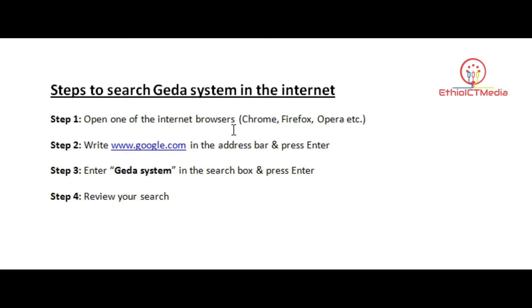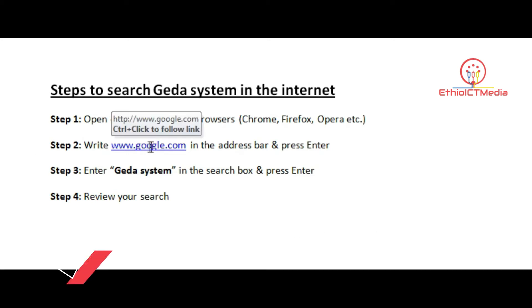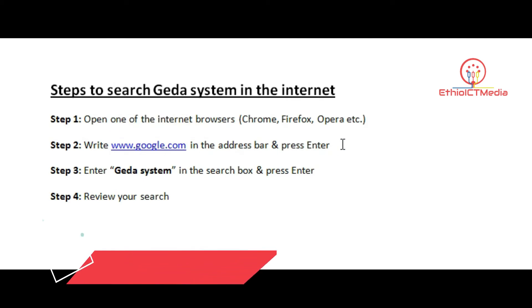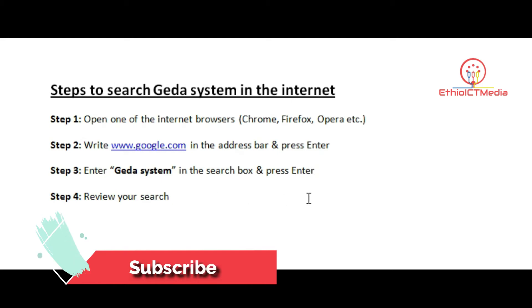Step 1: open one of the internet browsers — Chrome, Firefox, Opera, or another internet browser. You can use google.com or ask.com. Step 3 is the Gada system search. Type in the search box and press Enter.